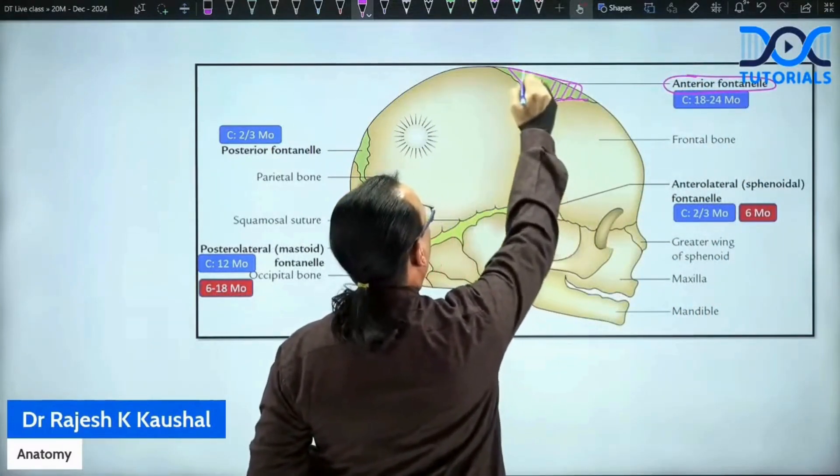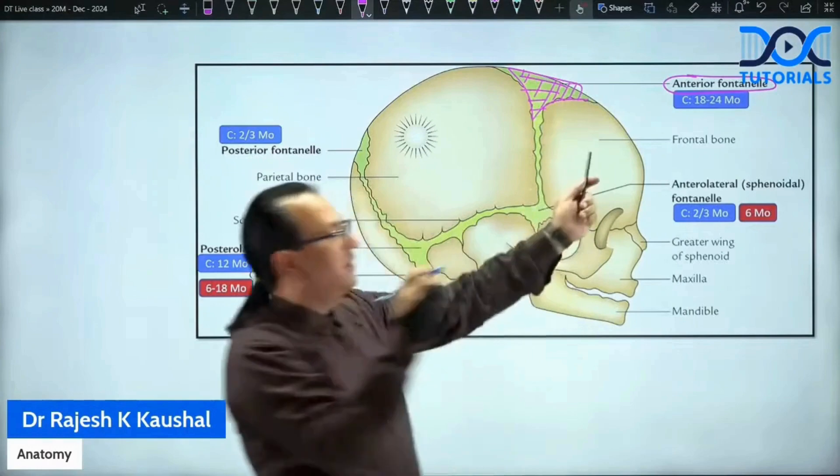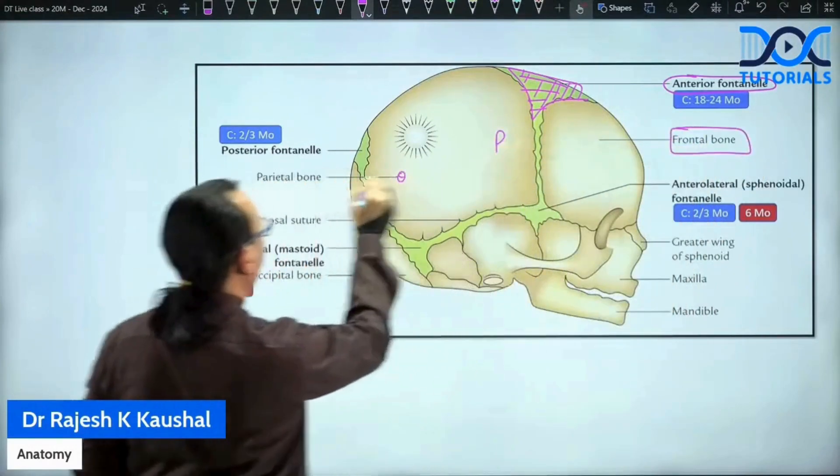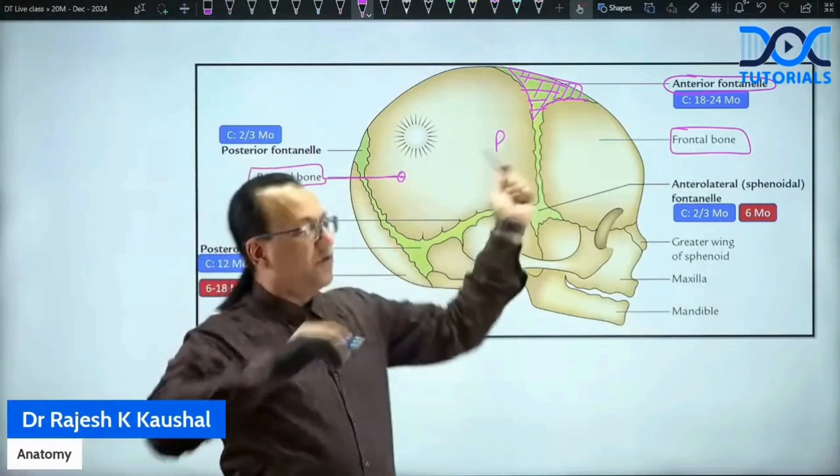It is a gap between the skull bones and on the front, we have the frontal bone and on the posterior side, we have parietal bone, which is marked here. So that is anterior fontanelle.